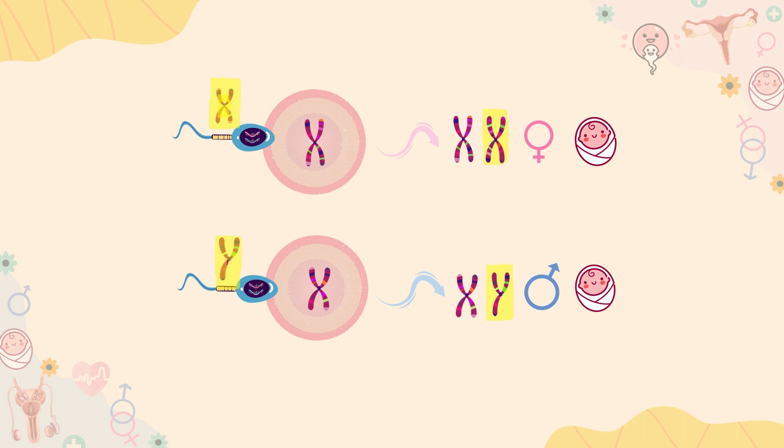Since the two chromosomes are different in a male, it is known as the heterogametic sex. And a female is termed the homogametic sex, since the two chromosomes are the same.